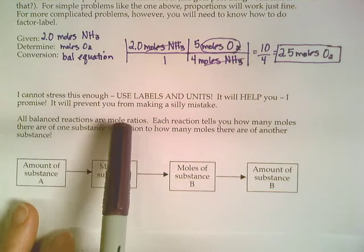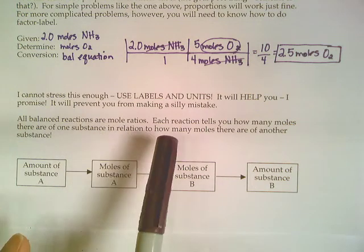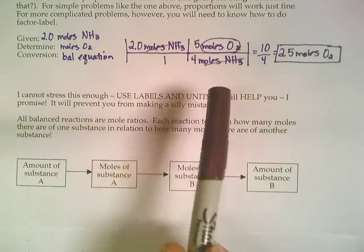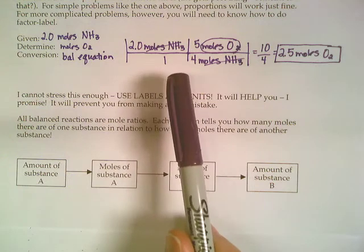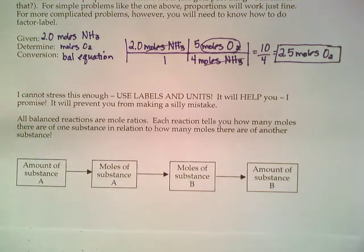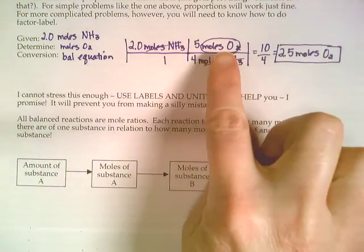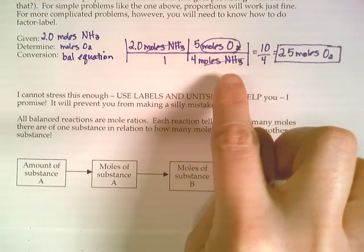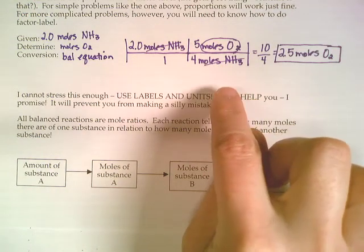I can't stress this enough - use your labels and units. I know it takes a little bit extra time to write the words moles of NH3 and moles of O2 up there, but if you don't write those labels in, number one, you're going to lose some points on quizzes and tests that you take. But number two, you're way more likely to get wrong answers because you'll accidentally flip these conversion factors upside down or skip a step or something like that.